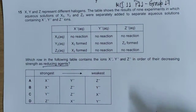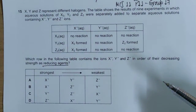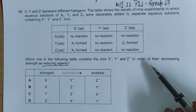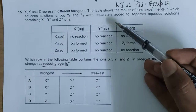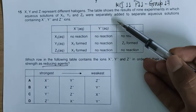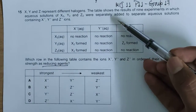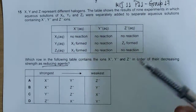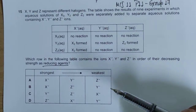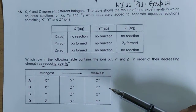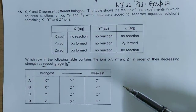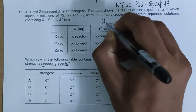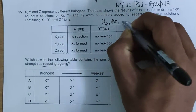We have five different halogens, but by the process of elimination we can come down to three. Fluorine is not used in typical laboratory experiments because it is a very powerful oxidizing agent — it even oxidizes water to oxygen. Astatine is very radioactive, so it's definitely not used in a laboratory experiment concerning a test of halogens. So we're down to chlorine, bromine, and iodine.